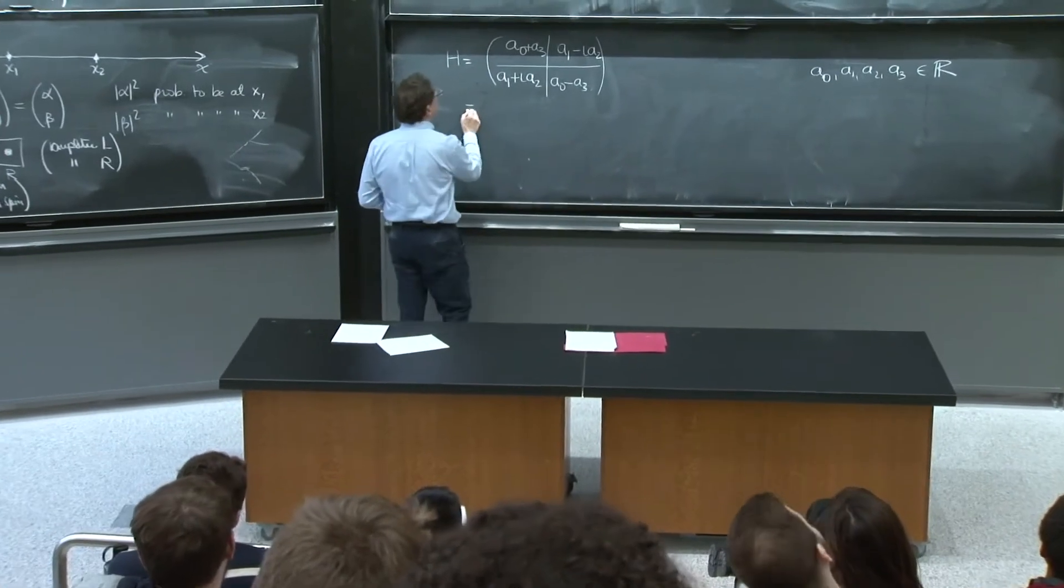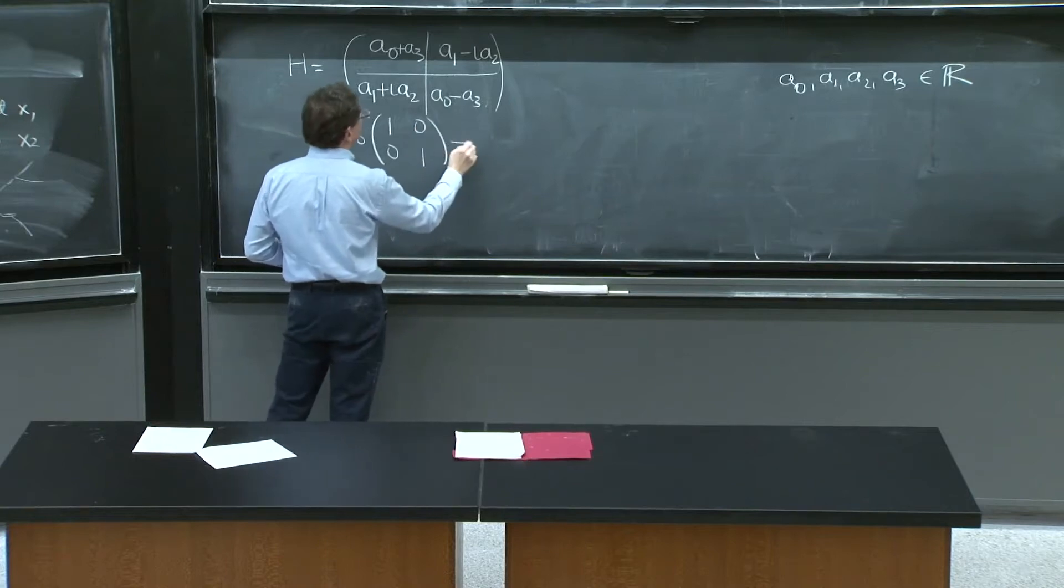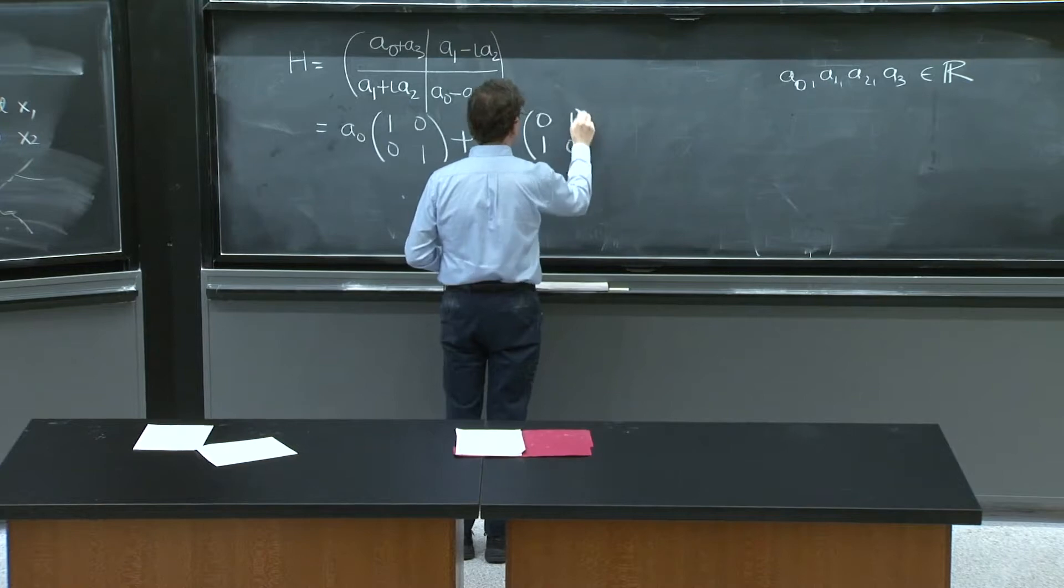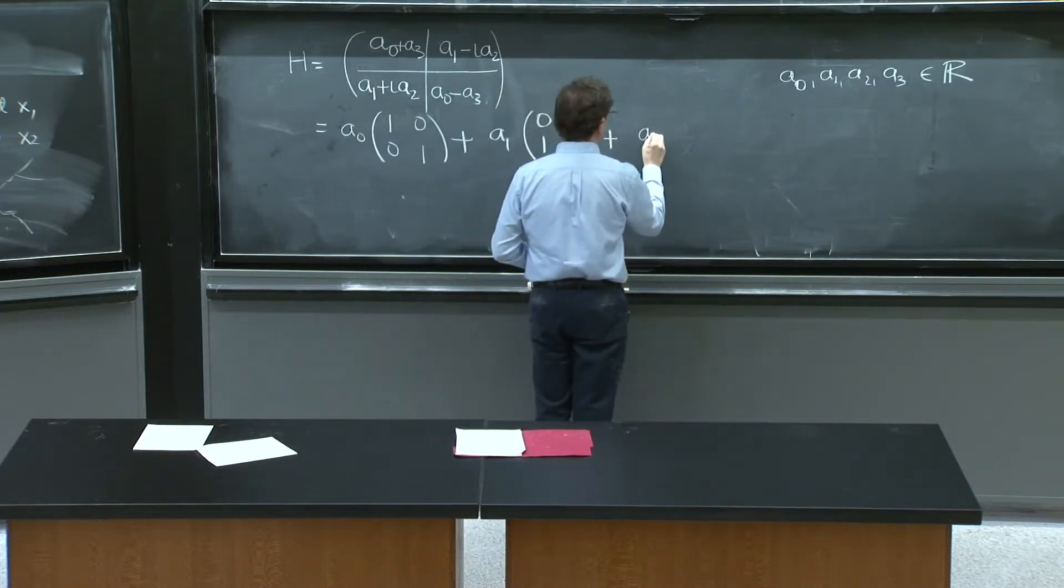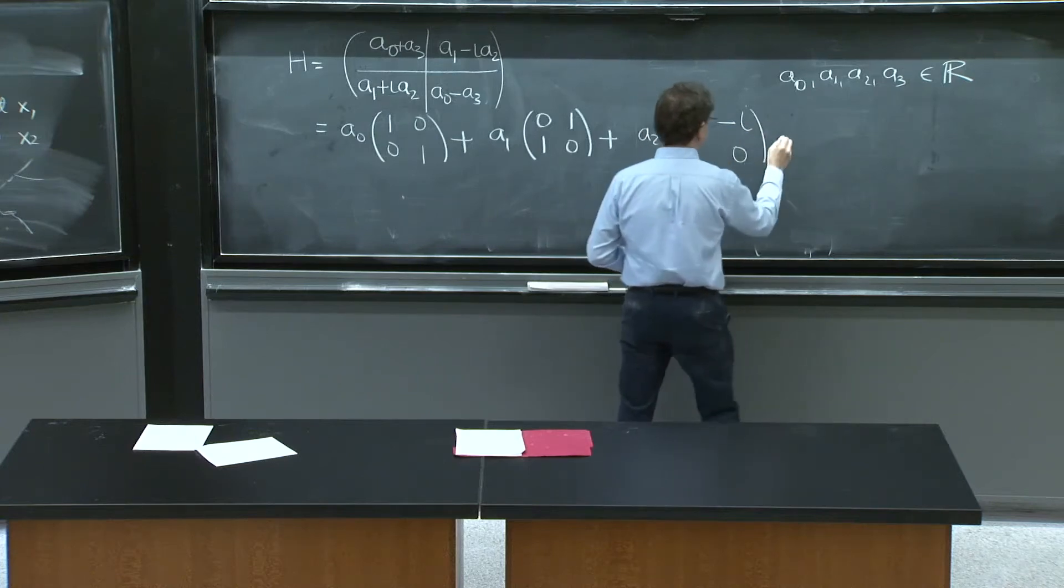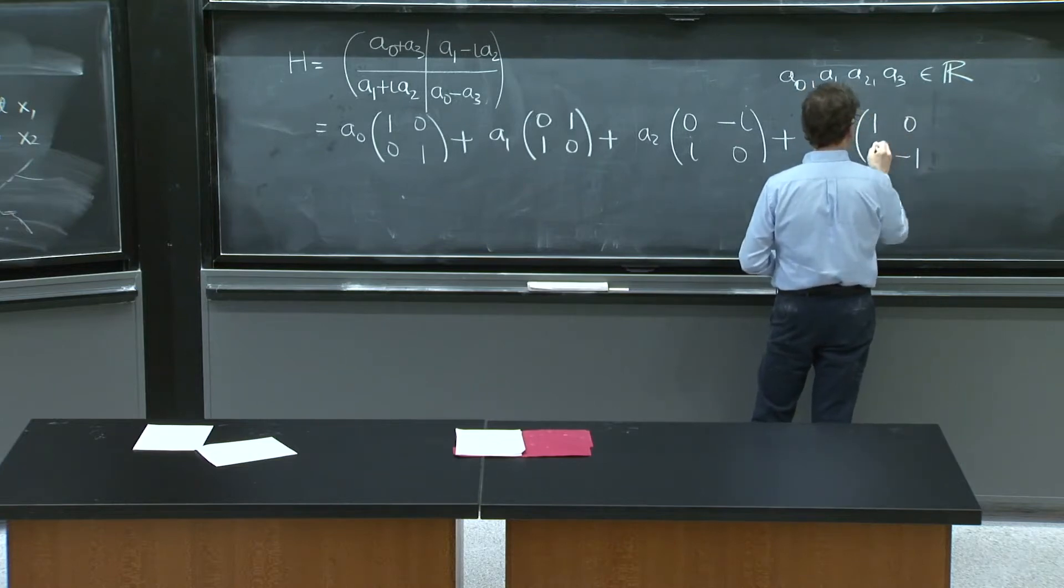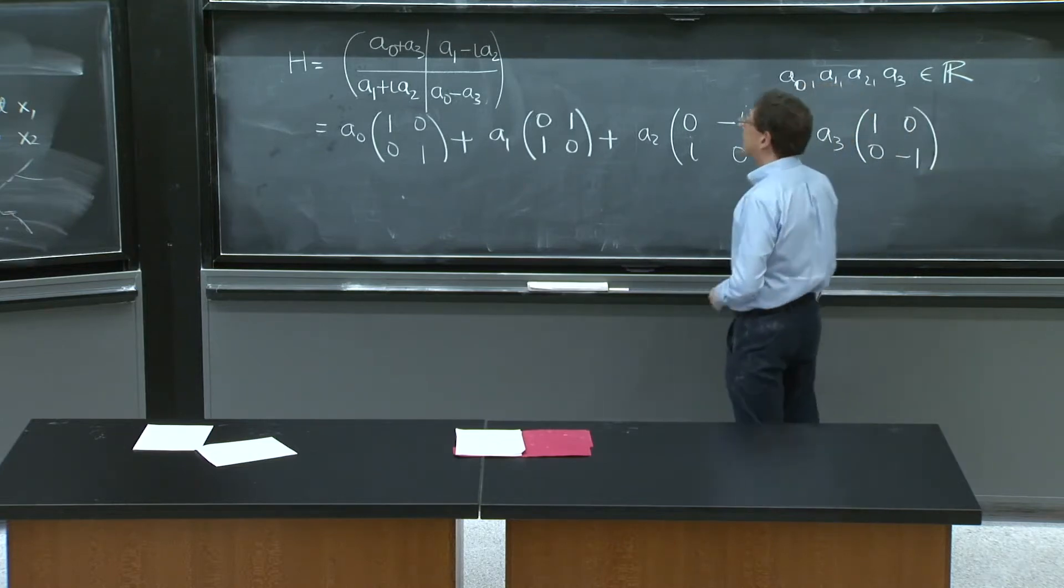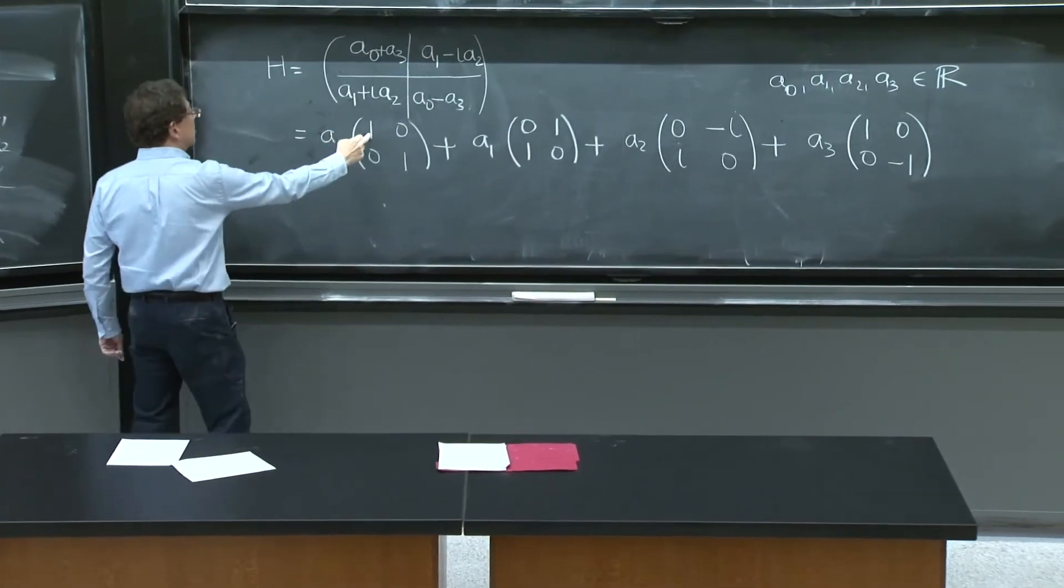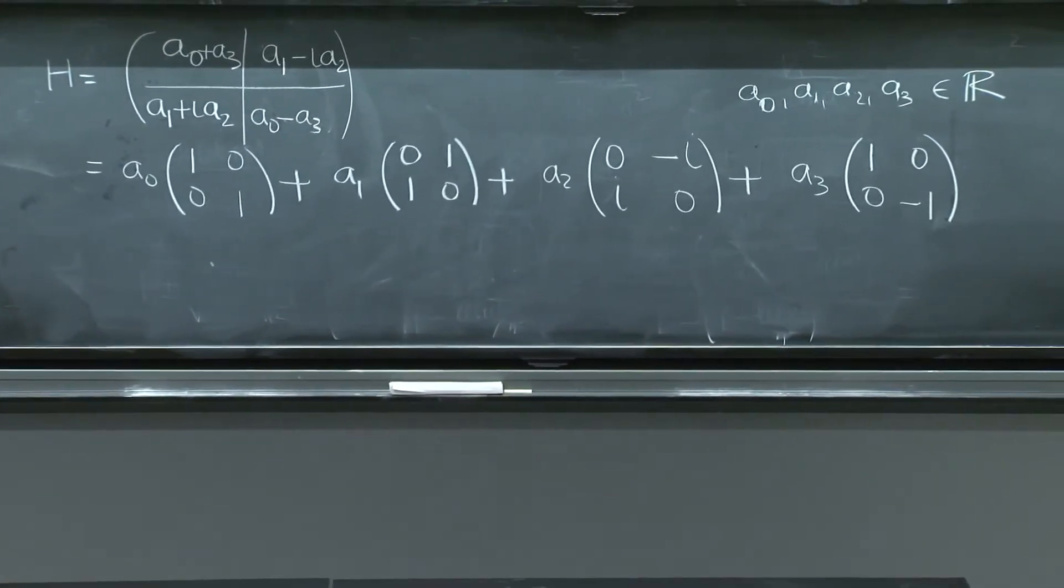So I will write this as A0 times this matrix, plus A1 times this matrix, plus A2 times this matrix, plus A3 times this matrix. That's exactly what you have in there. Multiply in this constant and add these matrices. And they give you all what we have.